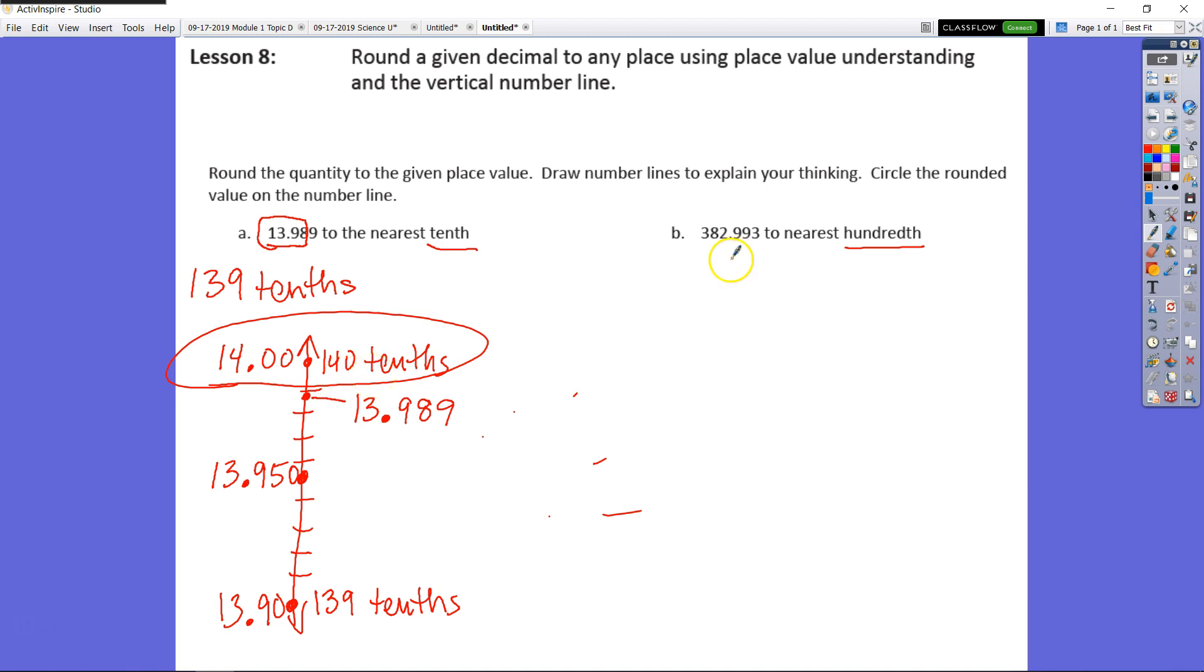Alright, let's take a look at B. So now we round it to the nearest hundredths. Looking at this number, if we go all the way up to our hundredths, that is the maximum number of hundredths we can have, which would be 38,299 hundredths. So that would be our endpoint at the bottom.